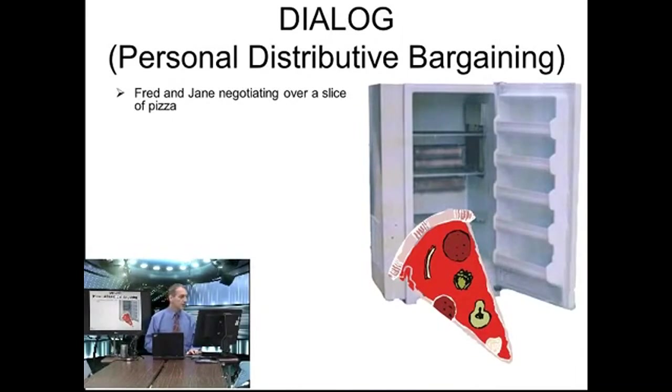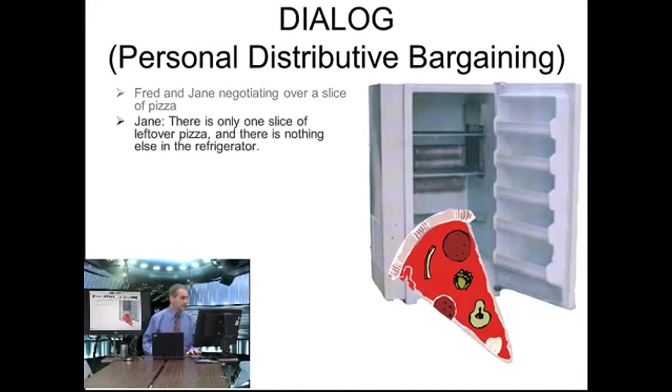Fred and Jane are negotiating over a slice of pizza they found in the refrigerator — leftover pizza. That's really common.